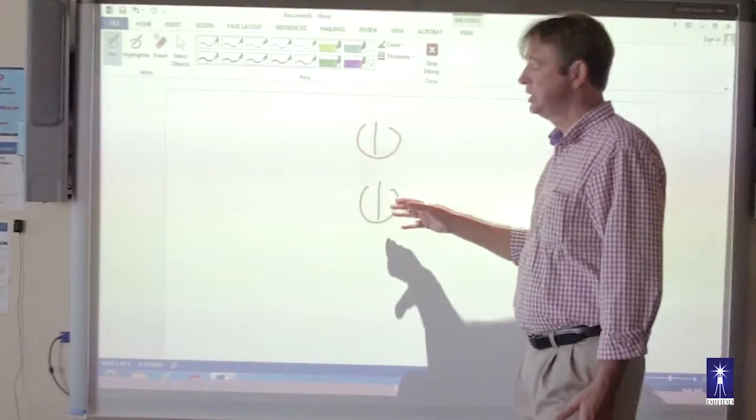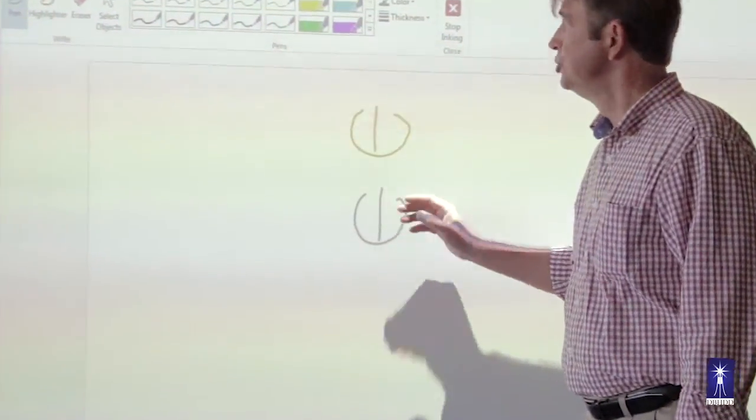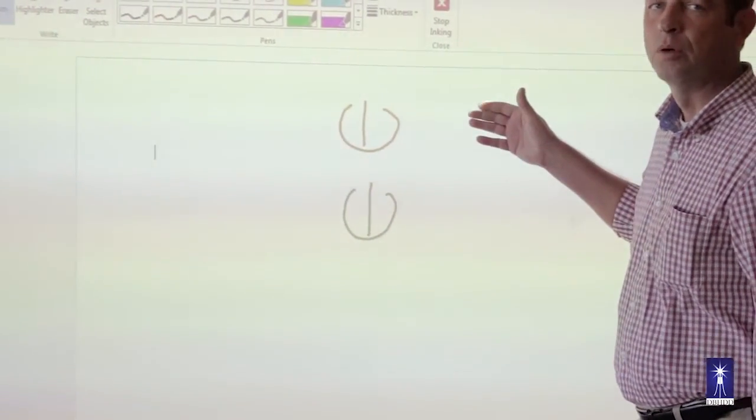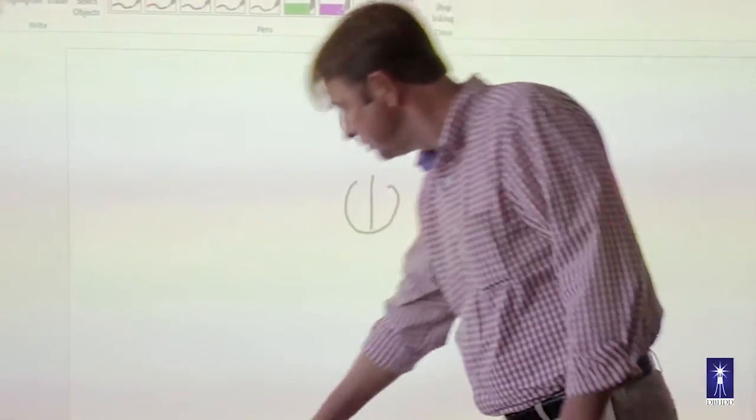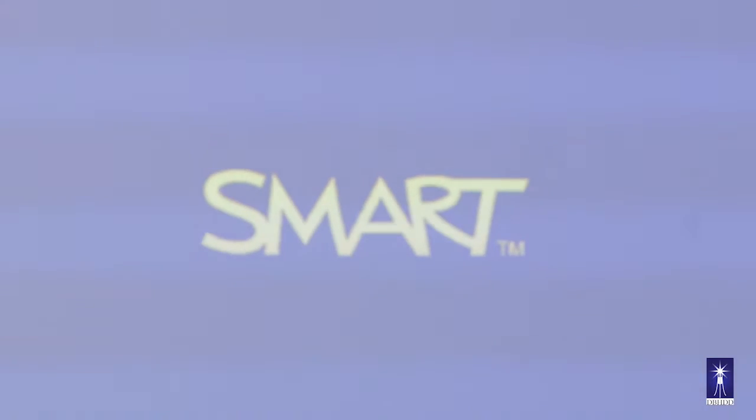Once you have a green status light on your monitor, you should have the desktop. If you don't have the desktop, if it looks something like this, then what has happened is somebody at some point in time has mashed this button.